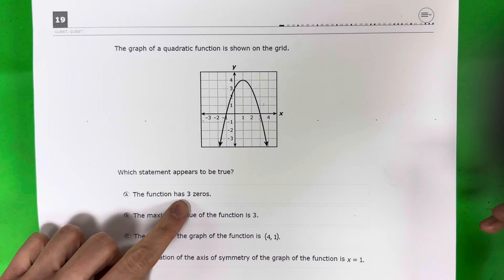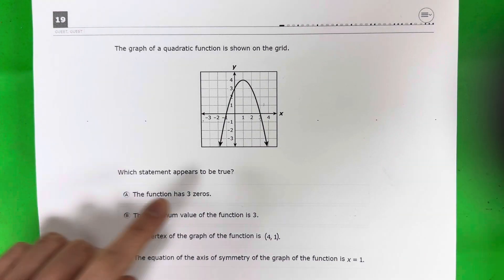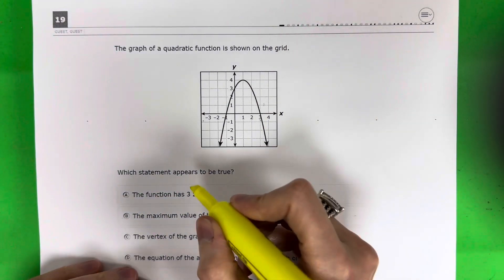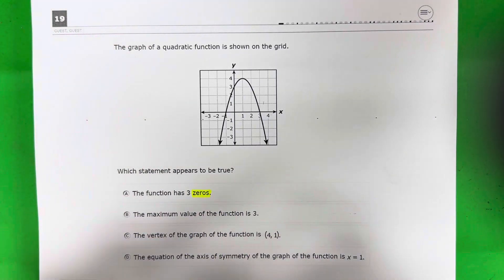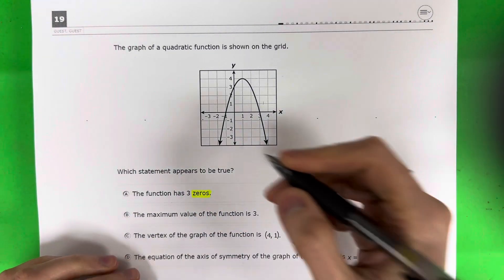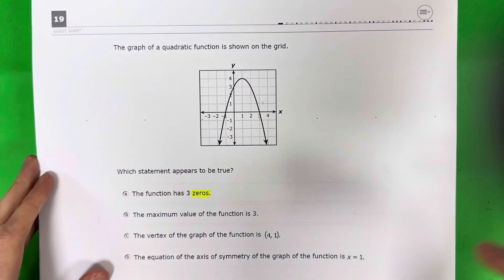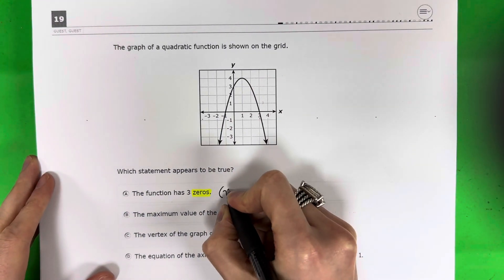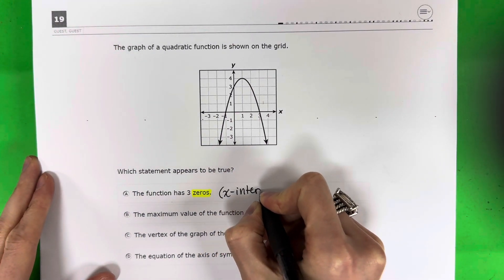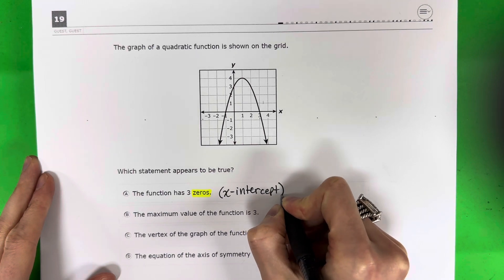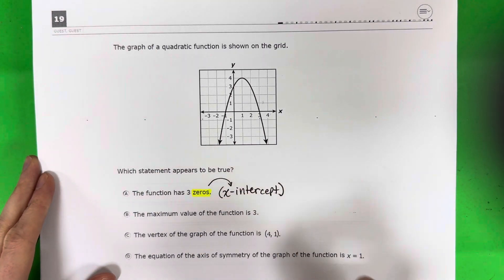The function has three zeros. Okay, so what's the importance here? It's zeros. What is a zero? A zero for a quadratic function? It's another word for x-intercept. Okay, that's what a zero is. It's an x-intercept.